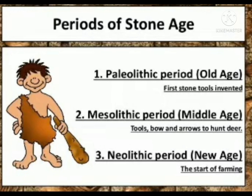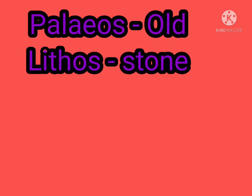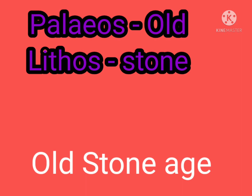Paleolithic is a Greek term that comes from two words: Paleos, which means old, and Lithos, which means stone. It is also called the old stone age.